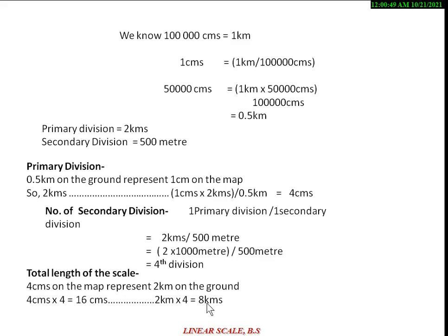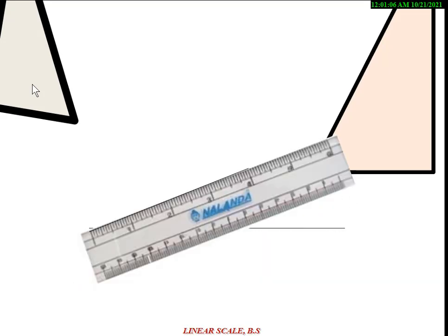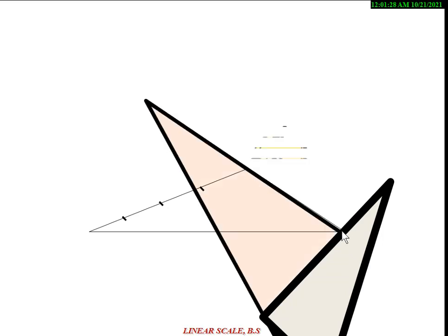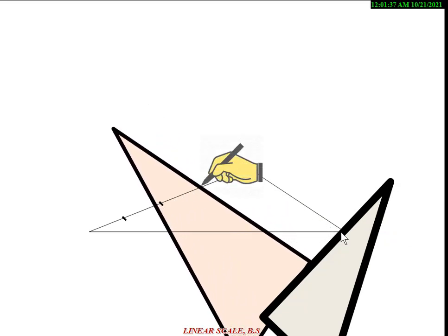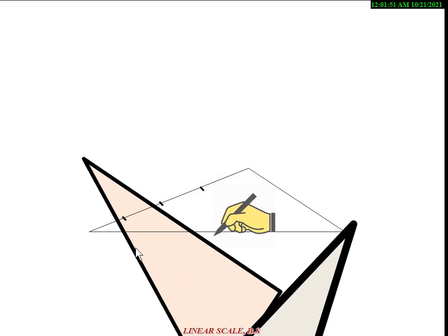Now we move to the drawing part. With a scale and set square, first draw a 16 cm straight line. Then place your scale at approximately 45 degrees on the line and divide into positions 1, 2, 3, 4. Join the points and move your set square to draw parallel lines. Repeat this for each division.